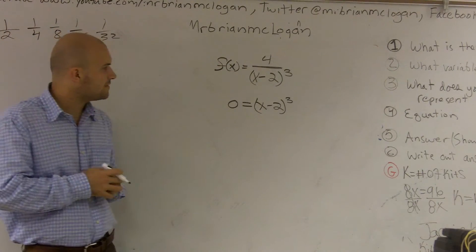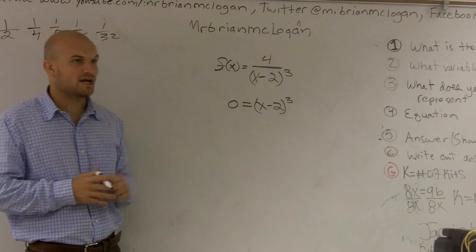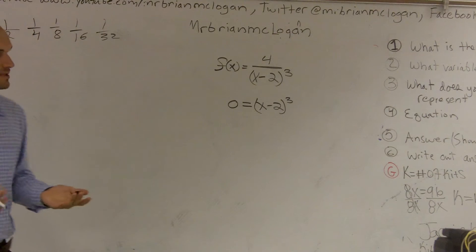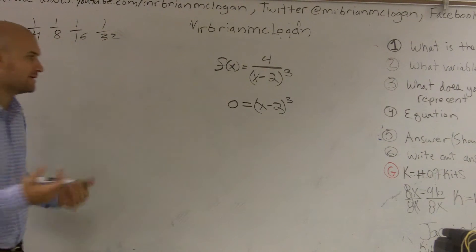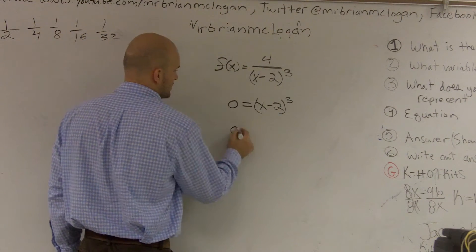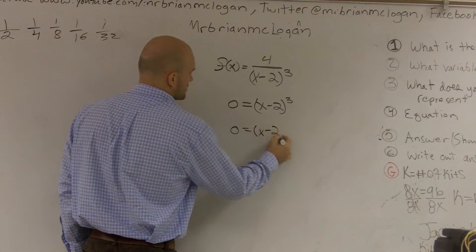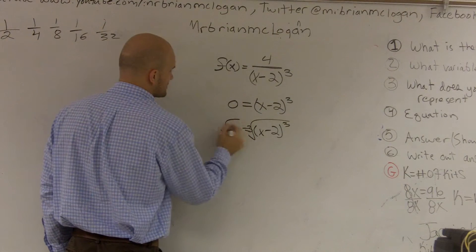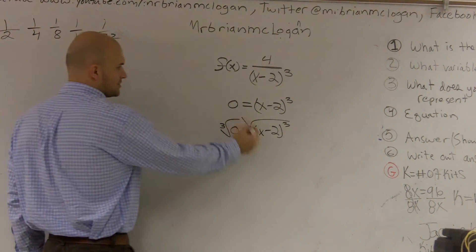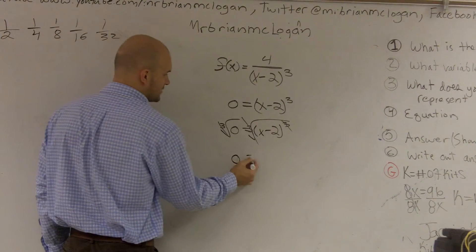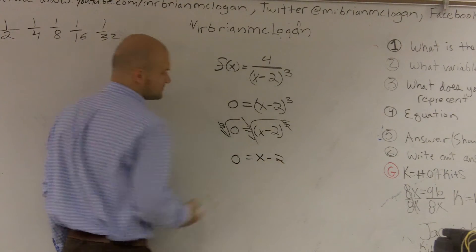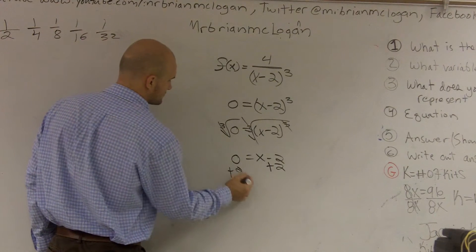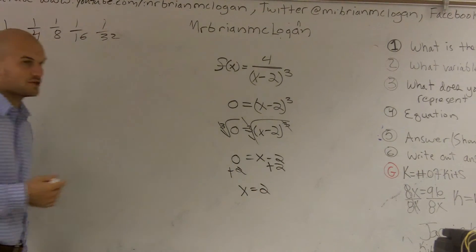So first of all, to find the zeros, we need to find the values of X. Here we have a binomial cube, so we need to undo our cubing by taking the cube root. I take the cube root to cancel off the cubing. This becomes zero equals X minus two. Then to solve for X, I add two to the other side — so X equals two.